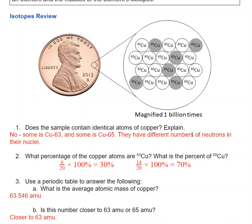So if we look at the copper in a penny, we would see that not all of the atoms are the same. Some is copper-63 and some is copper-65. So the difference between them is that they have different numbers of neutrons in their nuclei.